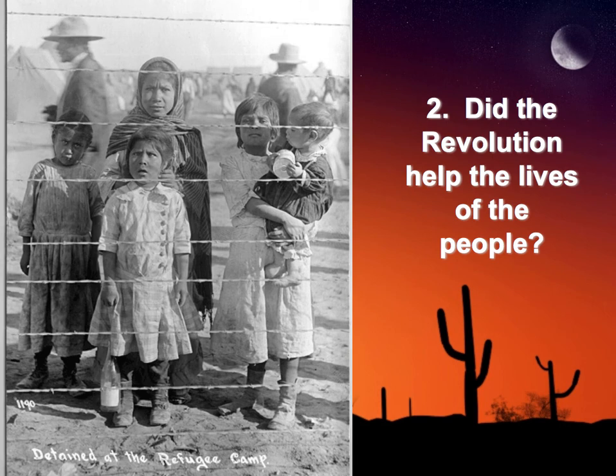Díaz resigned and went into exile. Madero became president, but there was a coup and he was assassinated while in prison in 1913. General Victoriano Huerta took over and established a government very similar to Díaz — he had no support of the people. The U.S. sent troops to show displeasure with Huerta coming to power, and he was ousted from power in 1914.